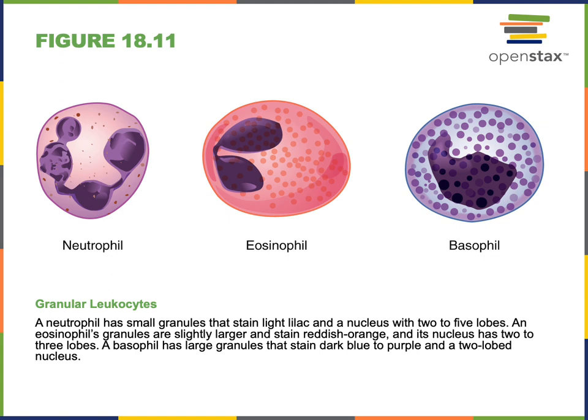Eosinophils are associated with parasitic infections, helping to defend against multicellular parasites like parasitic worms. They are also associated with allergies, and elevated levels of eosinophils are commonly seen in patients with allergies. Basophils are important for stimulating inflammation. Though they are the least common of the leukocytes, when basophils become activated and release their cytoplasmic granules, they stimulate inflammation to recruit other leukocytes to defend against infection.